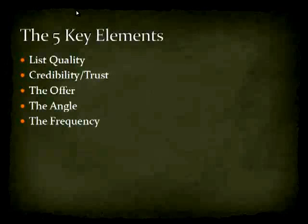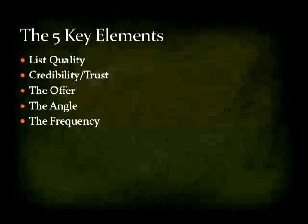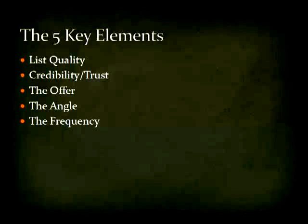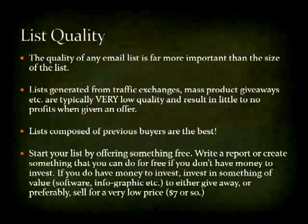The five key elements are: list quality, building credibility and trust with your list once you've built it, and then actually making money with your list — the offer, which is huge; the angle, which is probably equally as huge because you can have a good offer but a bad angle and make very little money, if any; and the frequency. So let's go ahead and get started with list quality.